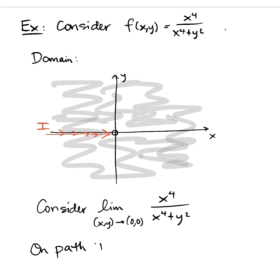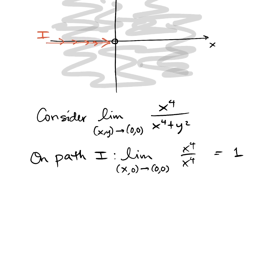on path one, we're really doing this limit. Limit as x comma zero approaches zero, zero. And when y is zero, note that our function is simply x to the fourth over x to the fourth. And so that limit is easily seen to be one.